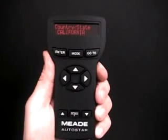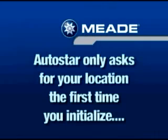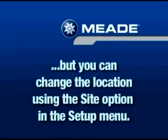The first time you use Autostar, it will ask you for your observing site's location and also for the telescope model. This information will not be asked for again the next time you initialize Autostar — it's asked for only once. Keep in mind, however, that if you wish to change the observing site location information at a future date, you can do so by using the site submenu, which is found under the setup menu.